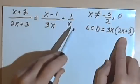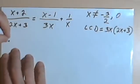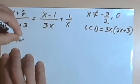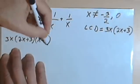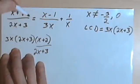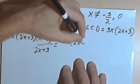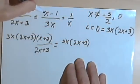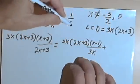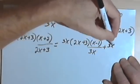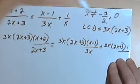I'm going to multiply each fraction by the LCD to get rid of the denominators. So I'll have 3x times 2x plus 3, times x plus 2 over 2x plus 3, equals 3x times 2x plus 3, times x minus 1 over 3x, plus 3x times 2x plus 3, times 1 over x.